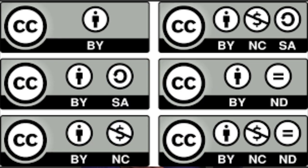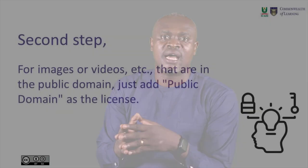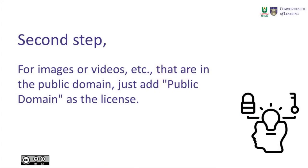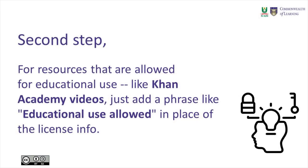We discussed Creative Commons licensing in week one. For images or videos that are in the public domain, just add 'Public Domain' as the license. For resources that allow for educational use — like videos you got from Khan Academy — just add the phrase 'educational use allowed' in place of the license info.